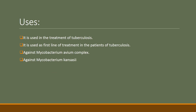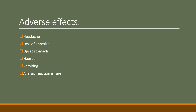Ethambutol is primarily used in tuberculosis and is a first-line therapy in patients with tuberculosis. It is also used against Mycobacterium avium complex and Mycobacterium kansasii. Adverse effects include headache, loss of appetite, stomach upset, nausea, vomiting, and allergic reactions.